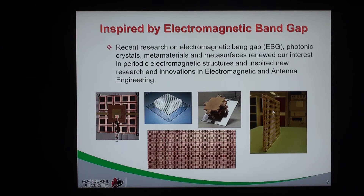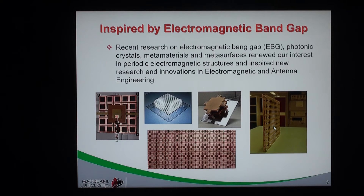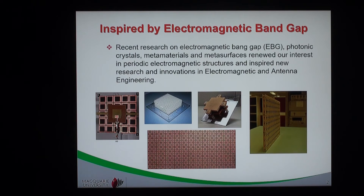This one is a dual-layer frequency selective surface. It was designed to transmit mobile signals from about 700 MHz up to about 2000 MHz, and at the same time to absorb 5 GHz Wi-Fi signals. So it is a transmit-absorb type frequency selective surface, as opposed to the transmit-reflect type of conventional frequency selective surfaces. The top layer has periodicity and is made out of conducting elements to reflect the signal, while the second layer also has periodicity but is made out of absorbing elements with resistivity rather than conductivity.